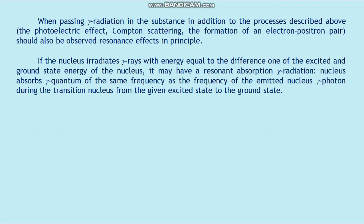When gamma radiation passes through a substance, in addition to the processes described above — the photoelectric effect, Compton scattering, and the formation of an electron-positron pair — resonance effects should also be observed in principle. If a nucleus irradiates gamma rays with energy equal to the difference between one of the excited and ground state energies of the nucleus, it may undergo resonant absorption of gamma radiation. The nucleus absorbs a gamma quantum of the same frequency as that of the gamma photon emitted during the transition from the given excited state to the ground state.